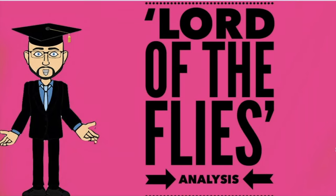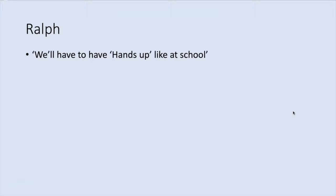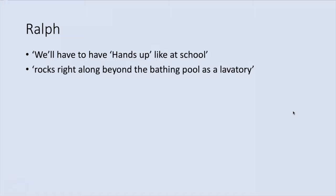Lord of the Flies can be interpreted as an examination of different styles of leadership, with the democratic leader Ralph coming up against the totalitarian leader Jack. Ralph wants everyone to have an equal voice, explaining 'we'll have to have hands up like at school' in Chapter 2. He wants to put things to a vote and represents law and order. Ralph also takes responsibility for others through building huts in Chapter 3 and making rules about keeping the environment clean.